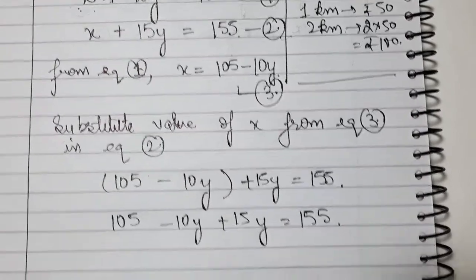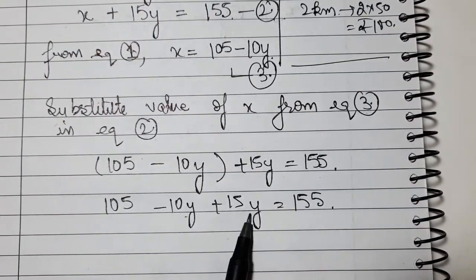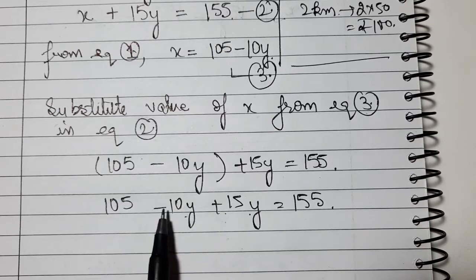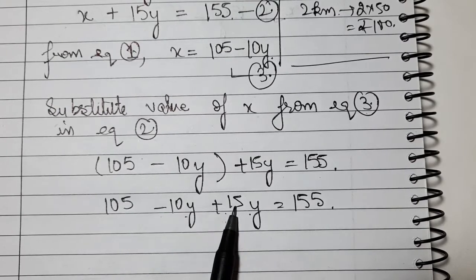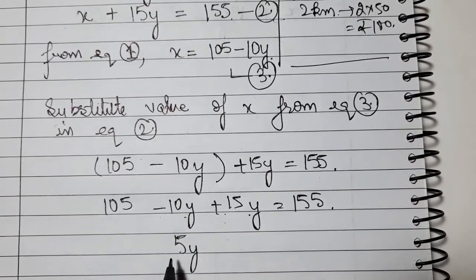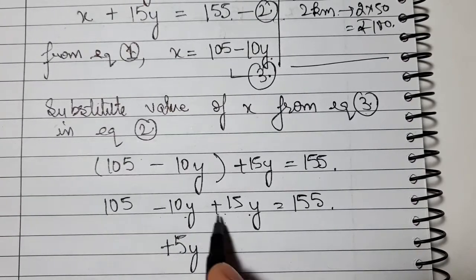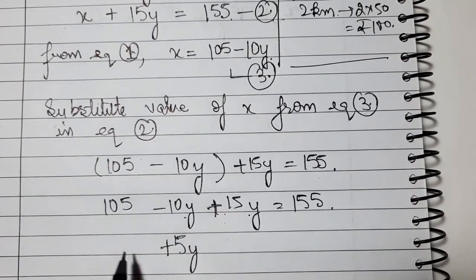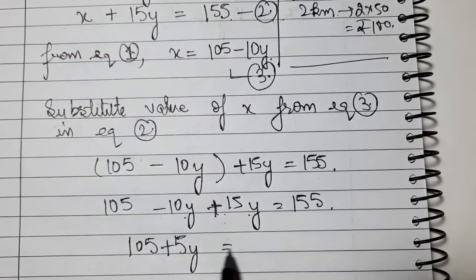Opening the bracket: 105 minus 10y plus 15y equals 155. The like terms, y variables: 15y minus 10y is 5y. The larger number is 15y so it gets a plus sign. Plus 5y, and 105 as it is, equals 155.